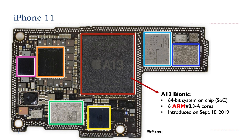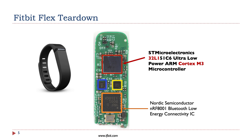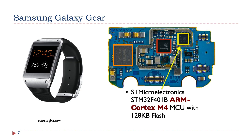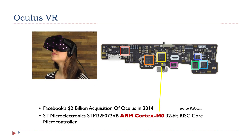To give you some examples, here is an iPhone 11 motherboard. It uses an A13 Bionic 64-bit SoC, which uses 6 ARM V8.3a processor cores. Another example is the Amazon Echo, which uses the DM3725 digital media processor from Texas Instruments with an ARM Cortex A8 processor. The Fitbit Flex uses an ultra-low power ARM Cortex M3 microcontroller, as does the Nest Learning Thermostat. Samsung Galaxy Gear and Samsung Gear Fit both use ARM Cortex M4 microcontrollers, and even the Oculus Virtual Reality device uses an ARM Cortex M0 microcontroller.